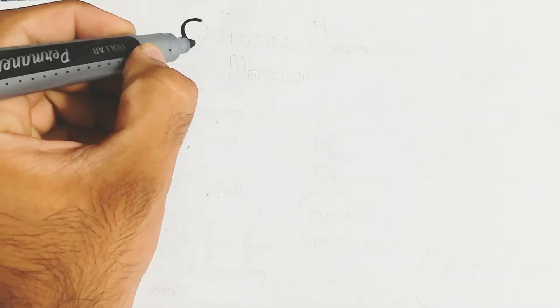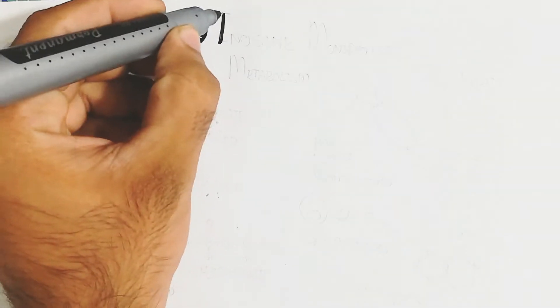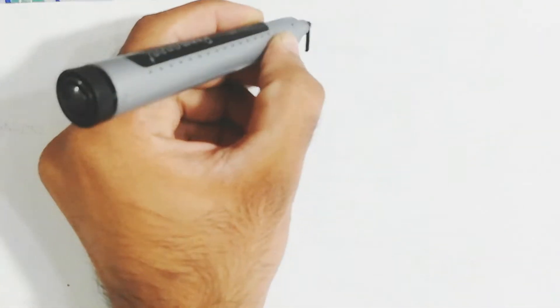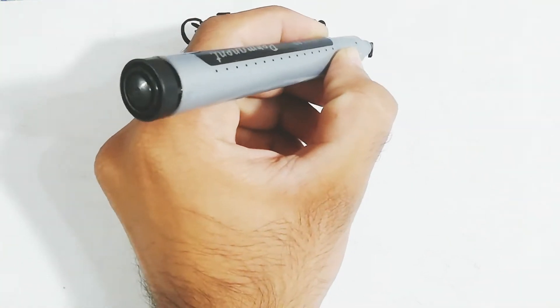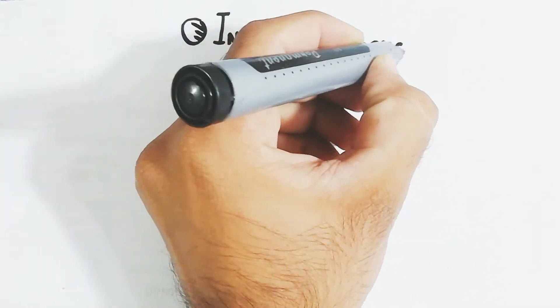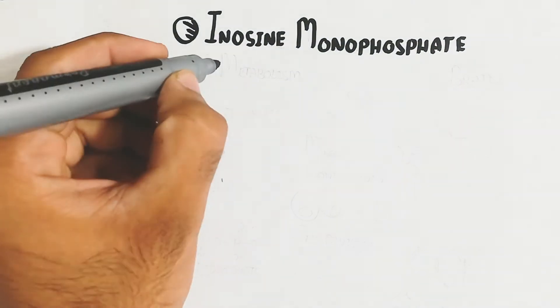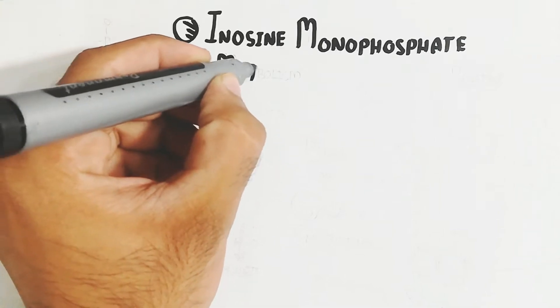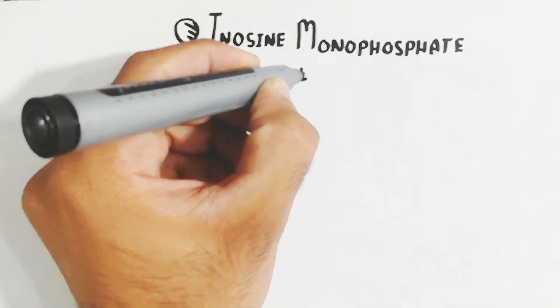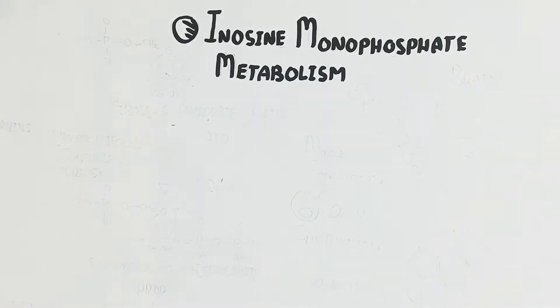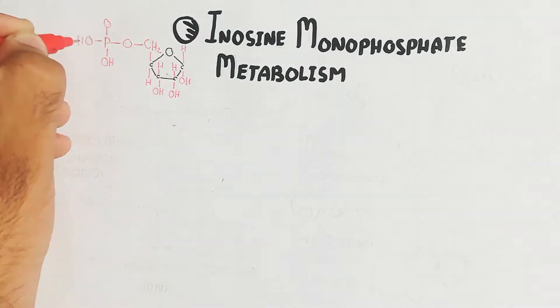In this video we will discuss about the inosine monophosphate metabolism. Metabolism is the combination of catabolism and anabolism. Catabolism is the breakdown of larger molecules into smaller molecules, while anabolism is the conversion of smaller molecules into larger molecules.